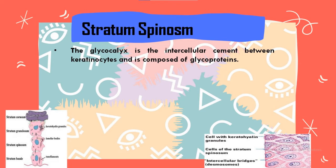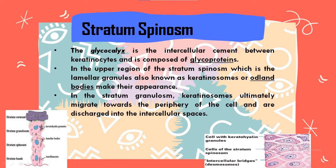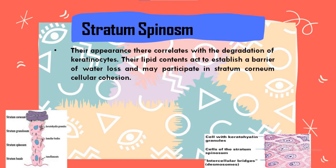In the upper region of the stratum spinosum, laminar granules, also known as keratinosomes or Odland bodies, make their appearance. In the stratum granulosum, keratinosomes ultimately migrate towards the periphery of the cells and are discharged into the intercellular space. Their appearance is correlated with degradation of keratinocytes, and their lipid content can act to establish a barrier to water loss and may participate in stratum corneum cellular cohesion.